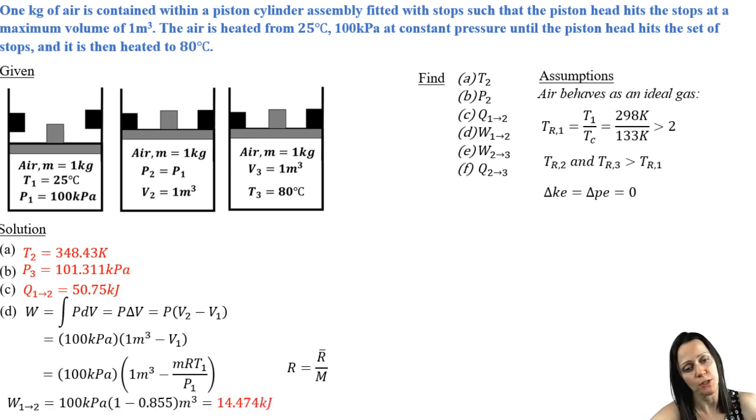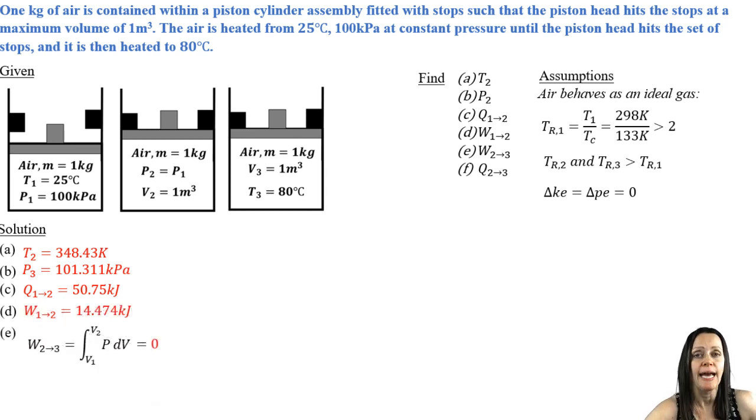Now I'm on to part E, which requires me to find the work for the constant volume process. And because there's no volume change, there's no boundary work, and there's no other type of work going on. So my work is equal to zero.